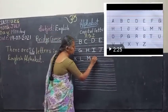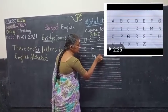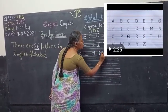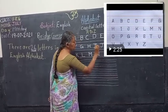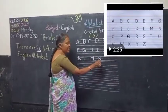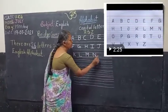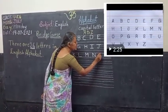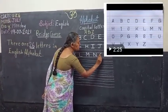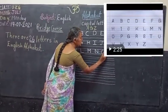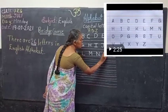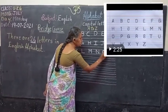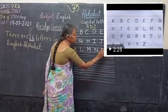Next: strike line, go up and come down — that is M. Next: strike line, strike line, go up, strike line — that is N. You have to write the circle — that is O.